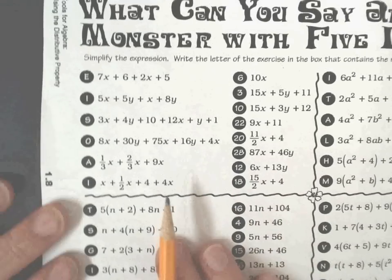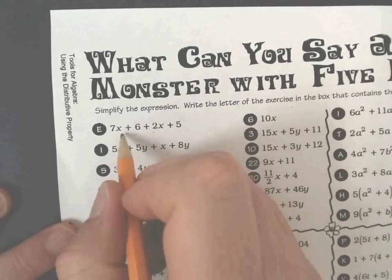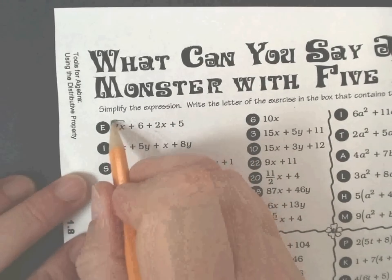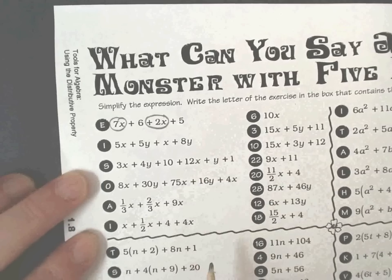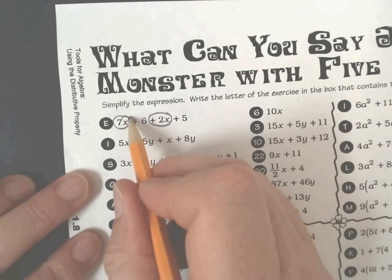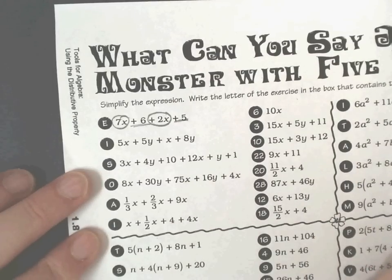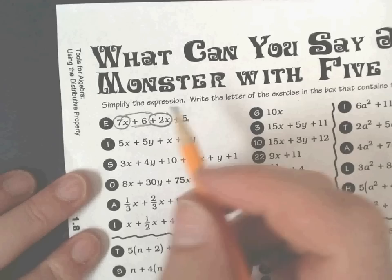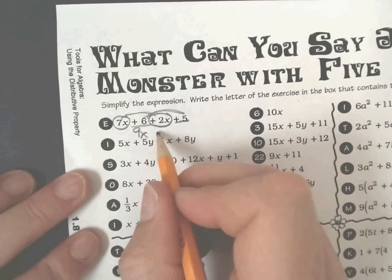Let's start off with the simplest one. I have 7x plus 6 plus 2x plus 5. If you'll remember from the other side, we're going to circle any variables that we have, any common things that we have, and either square or underline the second thing that we have. So these are like terms that I can add together. 9x, 6 and 5 is 11.